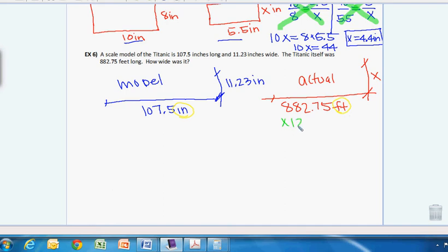So there's 12 inches in a foot, so I'm going to multiply this by 12. So 882.75 times 12 is going to give me 10,593 inches, and that's what I want to use. Okay, so I have four pieces of information. I'm just missing one, so I can figure out what that is, and we want to set up a proportion.